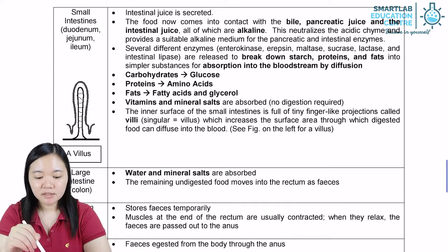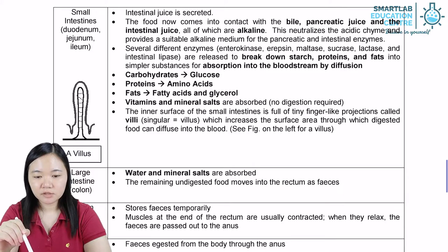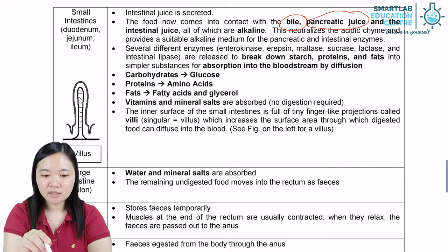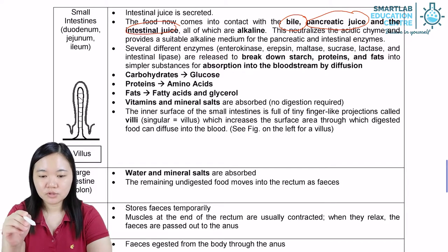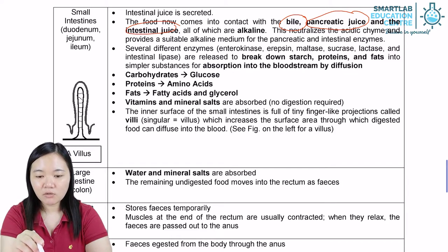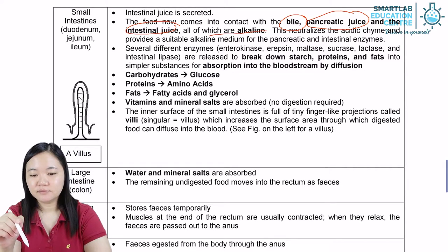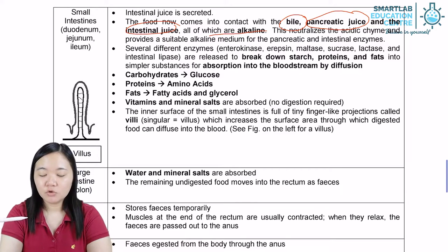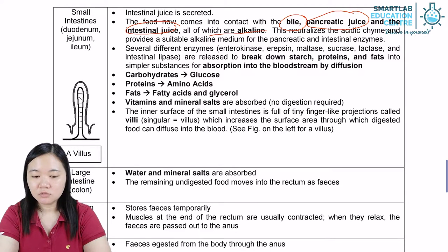In the small intestine, intestinal juice is secreted. The food now comes into contact with bile, pancreatic juice, and intestinal juice. They are all alkaline. So in that case, the acidic chyme will turn into something that is alkaline.